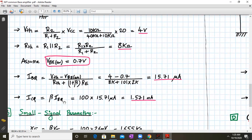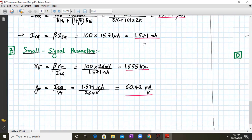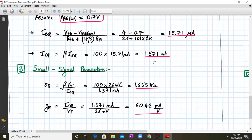Now ICQ will be beta times IBQ, which will be 100 times 15.71 micro amperes, which is 1.571 milli amperes. From these DC parameters, we can establish the small signal parameters. RPI is given by the formula beta VT upon ICQ, where VT is 26 millivolts. Substituting, we get 1.655 kilo ohms. GM is given by ICQ upon VT, which equals 60.42 milli ampere per volt.